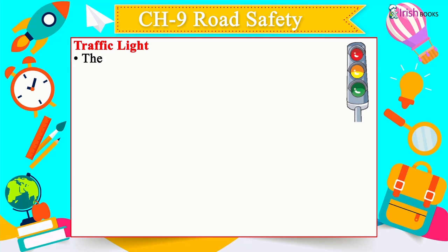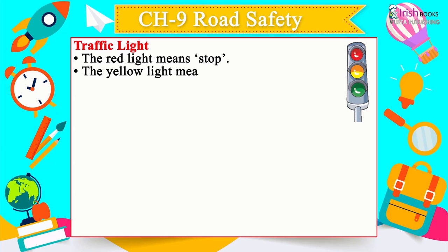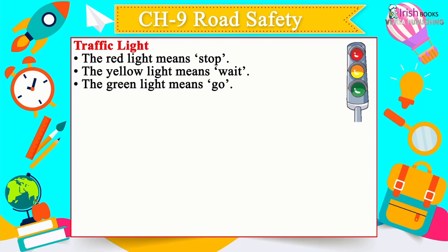Traffic Lights: The red light means stop. The yellow light means wait. The green light means go.